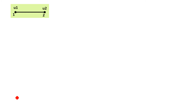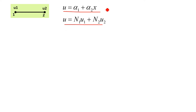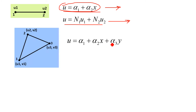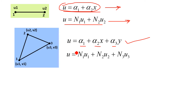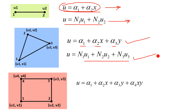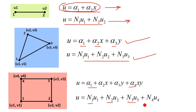Looking at a few examples: for the two-noded bar element, the displacement polynomial from Pascal triangle in Cartesian coordinates and the corresponding shape function form are shown. Similarly, for a CST element, the displacement function in terms of generalized coordinates α₁, α₂, α₃ and in terms of shape functions N₁, N₂, N₃. The same can be written for a four-noded rectangular element — from Pascal triangle in terms of generalized coordinates α₁ through α₄, and in terms of shape functions N₁, N₂, N₃, N₄.